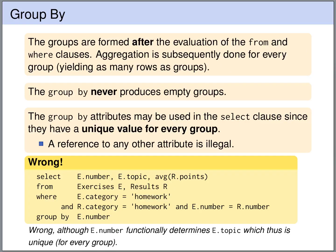The groups are formed after the evaluation of the FROM and WHERE clause. So first the rows are filtered using the WHERE clause, and then the groups are formed on the set of the remaining rows. The aggregation is then applied to each group separately. The result is one row for each group. GROUP BY never produces empty groups. And since the GROUP BY attributes have a unique value for each group, we are allowed to use GROUP BY attributes in the SELECT clause.